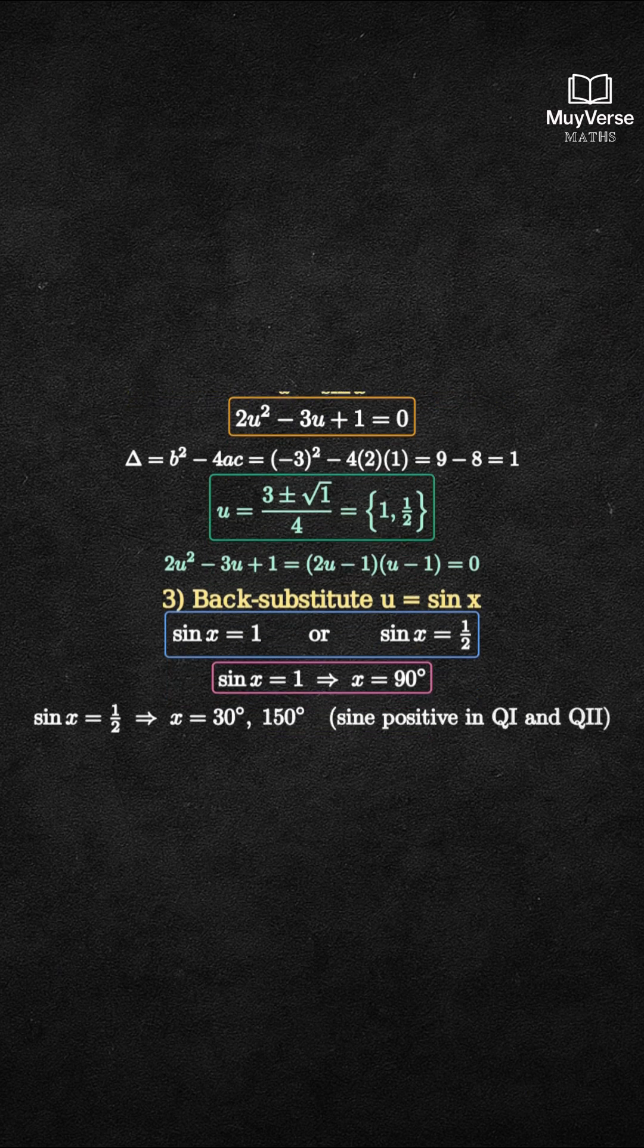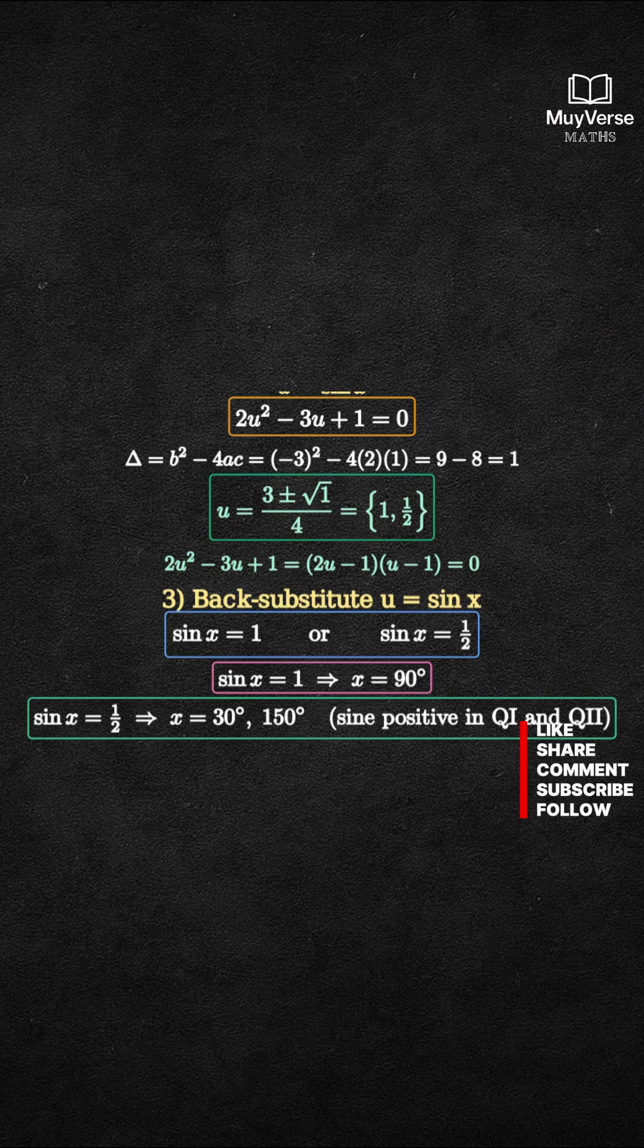For sine x equals 1 half, sine is positive in quadrants 1 and 2. The reference angle is 30 degrees. So the angles are 30 degrees and 150 degrees.